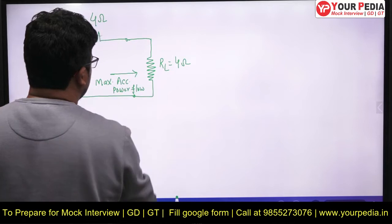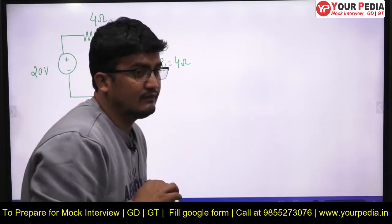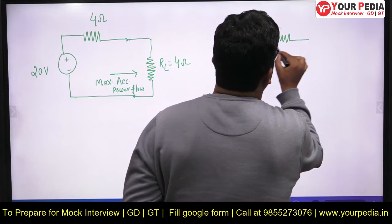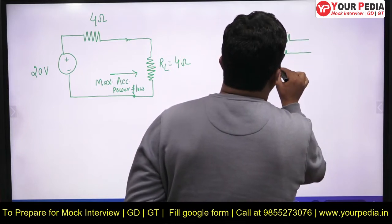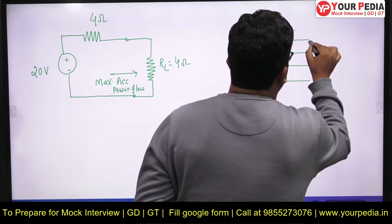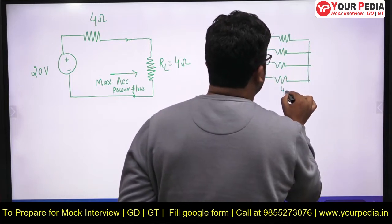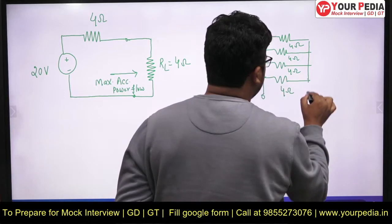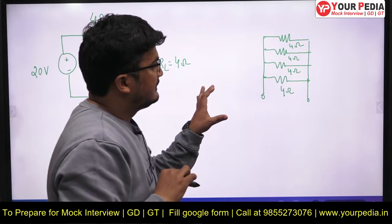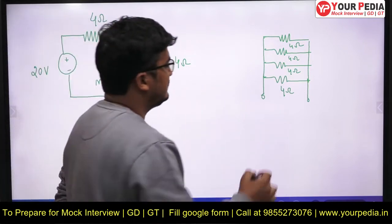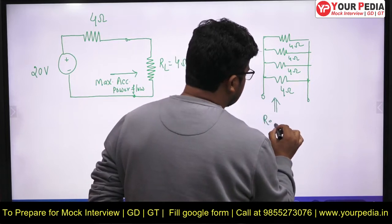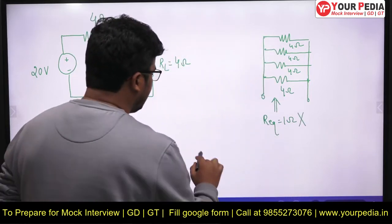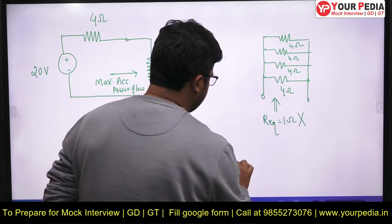Applying the Maximum Power Transfer Theorem, we need to get RL = 4 ohms using four 4-ohm speakers. One option: connect all four in parallel. Speaker 1 is 4 ohms, speaker 2 is 4 ohms, speaker 3 is 4 ohms, speaker 4 is 4 ohms. The equivalent resistance in parallel turns out to be 1 ohm — so 1 ohm is not the right solution.